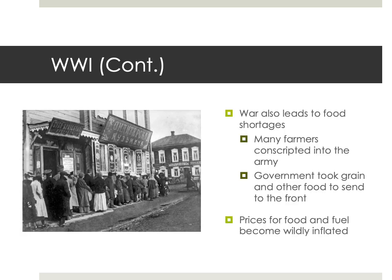Other effects that World War I had on Russia were massive food shortages. Many peasant farmers in the rural areas of the country had been conscripted into the army. The government was also taking lots of grain and other food that was being grown and sending it to the army on the front. As a result, there was a significant lack of food and resources. The prices for food and fuel became wildly inflated; the price of pretty much everything skyrocketed. People couldn't get food, people couldn't get firewood and coal to heat their homes. Major problems led to a lot of discontent on the home front.